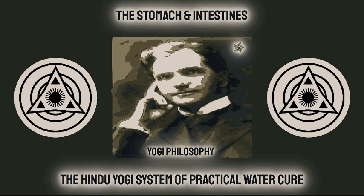Diagram of Stomach and Intestines: A. Stomach, B. Small Intestines, C. Cecum, D. Vermiform Appendix, E. Ascending Colon, F. Transverse Colon, G. Descending Colon, H. Sigmoid Flexure, I. Rectum, J. Anus. Referring to the diagram and accompanying key to same, and using the letters attached thereto, we begin at A.